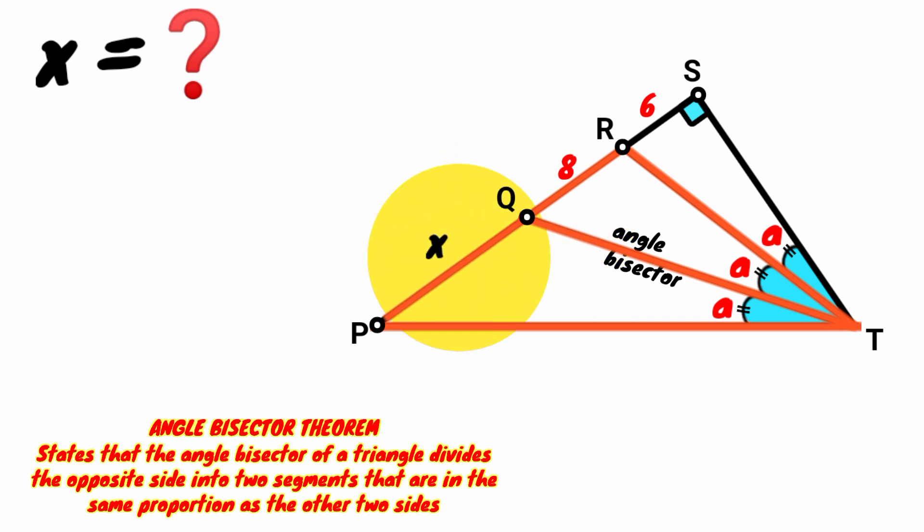That is, here this angle bisector divides this side such that this segment is in the same proportion with this as this side is to this. Assume the length of this to be y and this z, so x over 8 equals z over y.